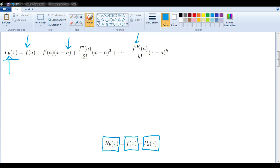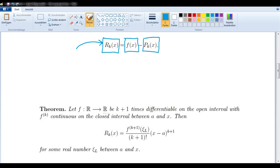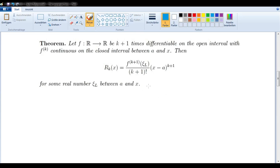Sometimes you might hear that being called the error. And there are different formulas for finding this error. The one we want to talk about is called the Lagrange form of the remainder. And this is the formula for that right here. That is the Lagrange form of the remainder.